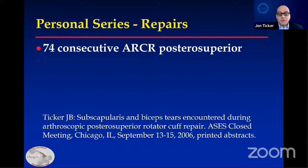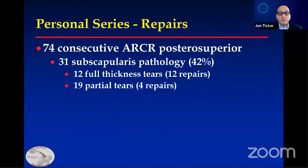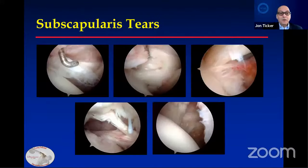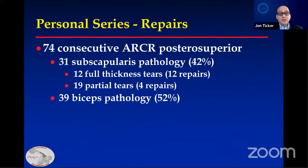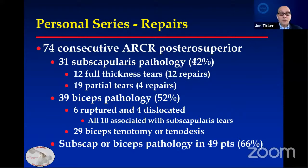Just to give some perspective of how prevalent subscapularis tears are — this was a consecutive series I collected. In 74 patients brought to surgery for arthroscopic posterior cuff repair, 31 to 42% had subscapularis pathology, and more than half required repair in my opinion. The tears can vary from partial tears on the upper row to full thickness tears on the lower row. There was also significant biceps pathology, often related to the subscapularis. Of the six ruptured and four dislocated biceps tendons, all were associated with subscapularis tears. Two-thirds required some subscapularis or biceps treatment.